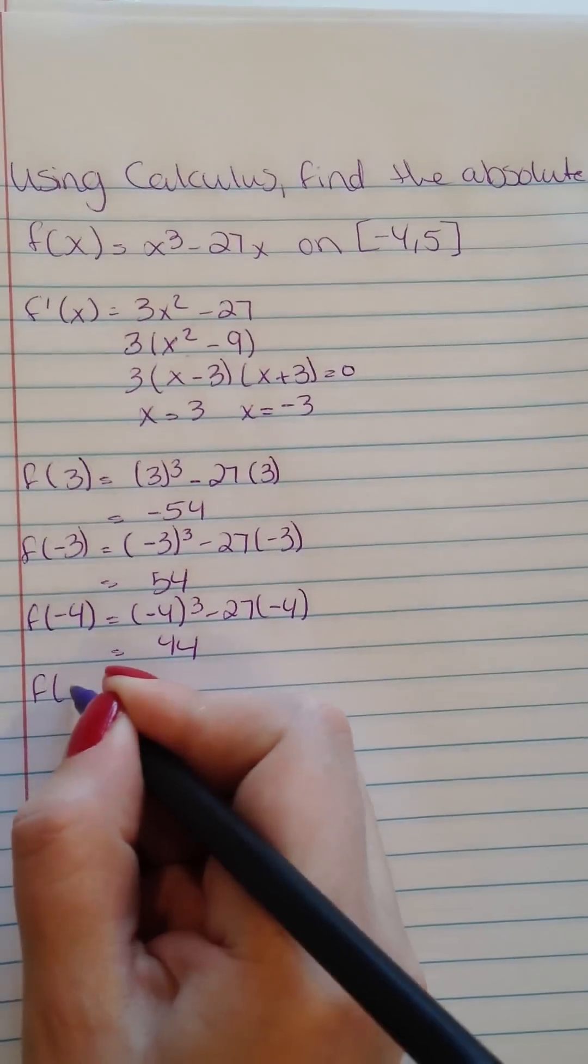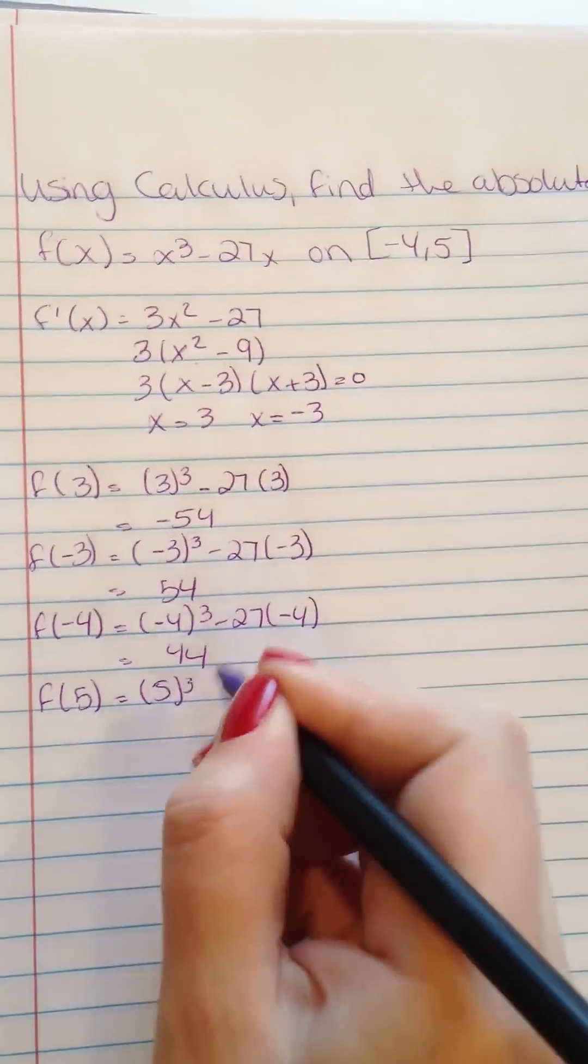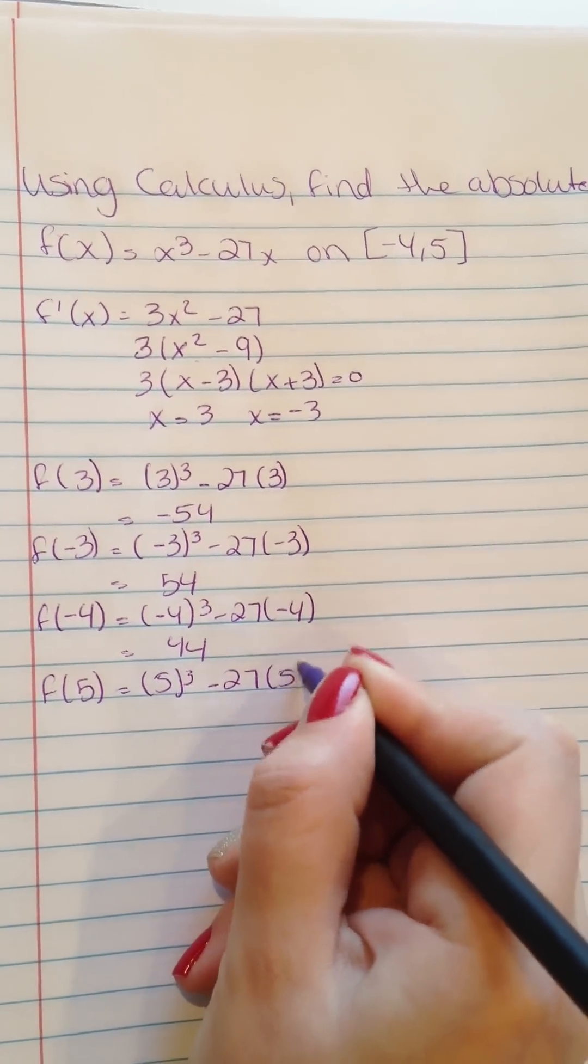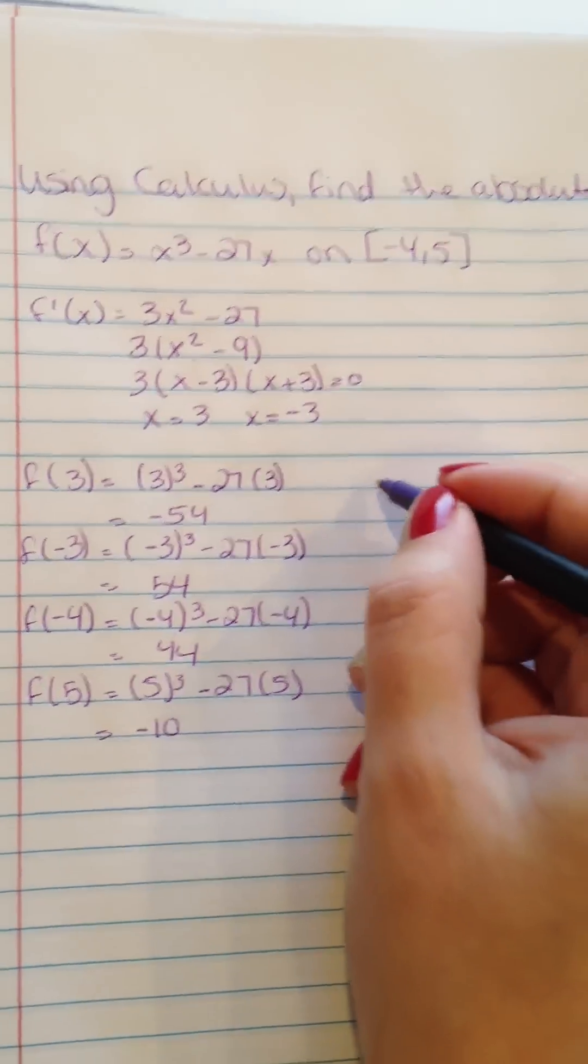f(5) equals 5³ - 27(5), and it's going to be -10.